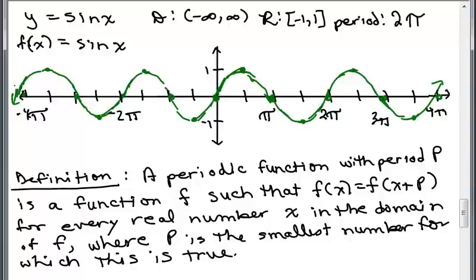So what I have at the bottom here is the precise definition for a periodic function. A periodic function with period P is a function F, such that F of X equals F of X plus P for every real number X in the domain of F, where P is the smallest number for which this is true. Man, that's hard to swallow and understand.